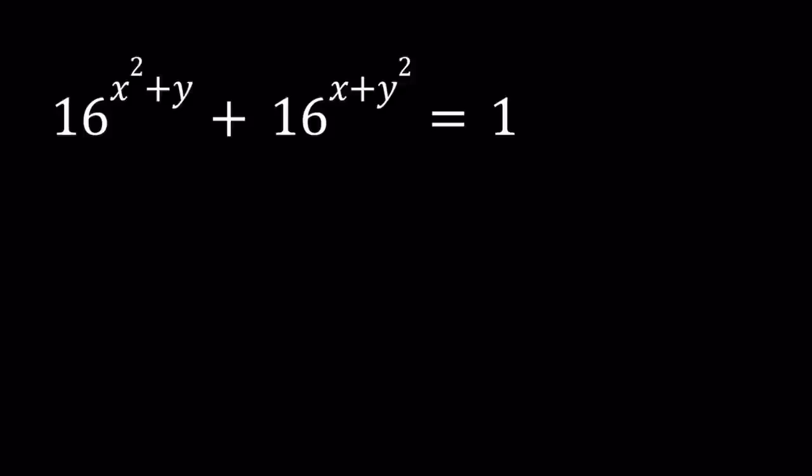We have 16 to the power x squared plus y plus 16 to the power x plus y squared equals 1. And we're going to be looking for x and y values. We're going to be looking for real values, but if you wanted to find the complex values, you could also do that because I'm going to give you a really nice equation that you can work with. Obviously, we're not necessarily looking for integer solutions, so this is not a Diophantine equation. Even though the solutions can turn out to be integers, but we don't know that ahead of time.